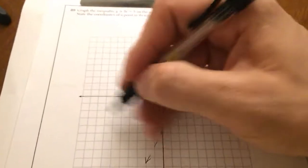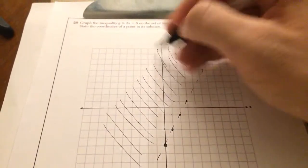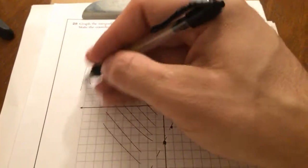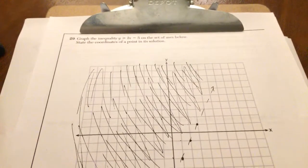It's saying greater than, so I'm going to shade above this. And what that means is every point on this side of the boundary line is a solution to that inequality.